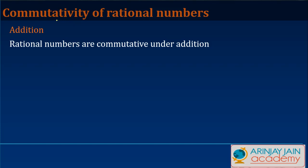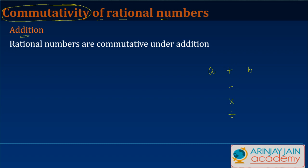In this video let's look at the commutativity of rational numbers. First we will see addition, but we should first understand what commutativity means. Commutativity means that if I have two numbers, let's call them a and b, and I perform any operation on them — whether addition, subtraction, multiplication, or division — does it make a difference if I put a first or b first?